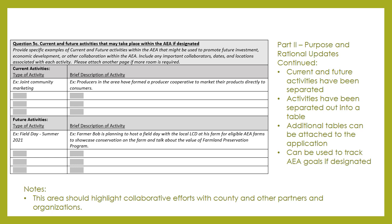Some events and activities to consider planning include hosting outreach meetings in the town where the proposed AEA is located to explain the farmland preservation program and discuss the benefits of an AEA. You may also consider creating informational materials for eligible landowners about the AEA and the available tax credits to be sent with town tax bills. You may also like to connect with local agribusinesses to discuss the benefits of an AEA, and connect with local conservation and farm groups to inform them of the designation.